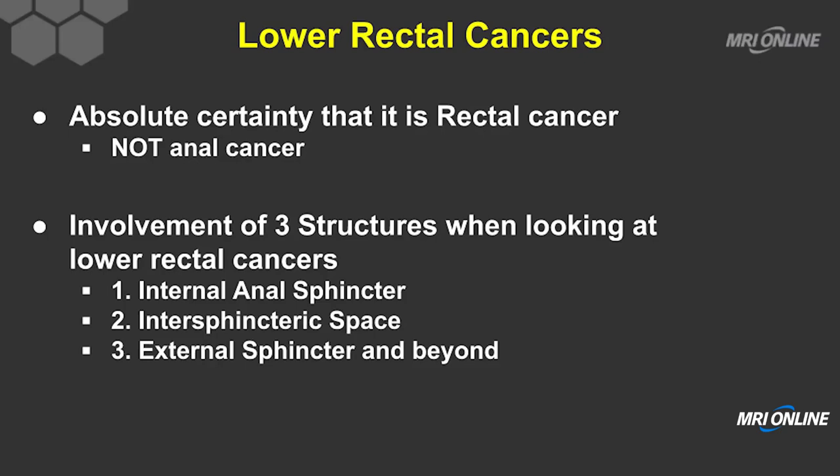The second point is that for low rectal cancers that extend into the anal canal, there is no concept about distance to the mesorectal fascia because there is no mesorectal fascia that you can identify in this location. So if it is at the level of the levator or the puborectalis, you give the shortest distance to the levator ani or to the puborectalis.